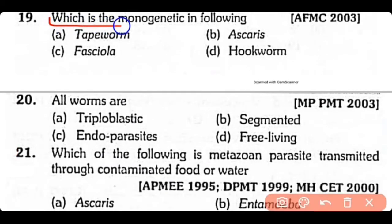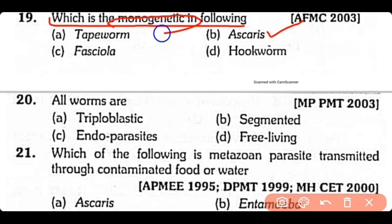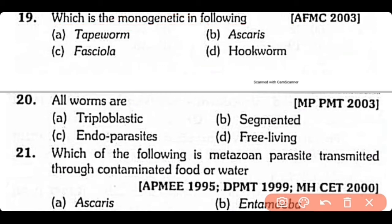Question 19: Which one is monogenetic — (A) tapeworm, (B) Ascaris, (C) Fasciola, or (D) hookworm? The correct answer is Option B. Ascaris is monogenetic because it completes its life cycle in one host, that is the human being.